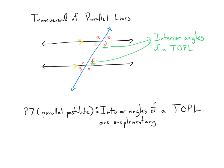We need one more postulate — the Parallel Postulate — which tells us how angles and parallel lines work together. It says that if you have two interior angles of a transversal of parallel lines, then those angles are supplementary. So D and F are supplementary, and C and E are supplementary. That's the Parallel Postulate, and that's what we're going to use to prove the Parallel X Rule.